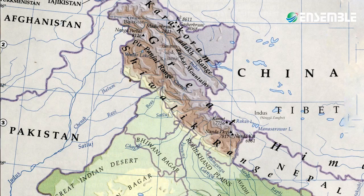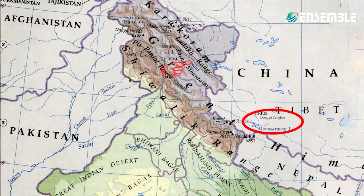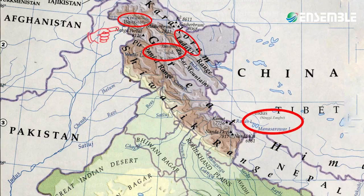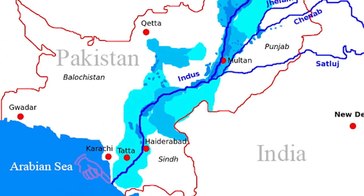The Indus river rises in Tibet near Mansarovar Lake, near Senge Gwangbo, in a spring. It flows west and north-westward and enters Indian territory in Jammu and Kashmir, then flows through Ladakh, Baltistan, and Gilgit. After emerging out of the hills, the Indus flows south-westward across Pakistan and finally reaches the Arabian Sea near Karachi.